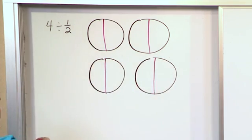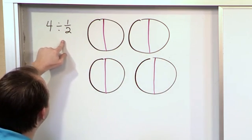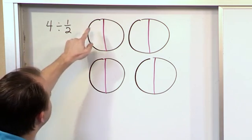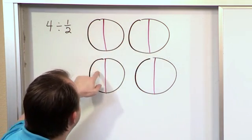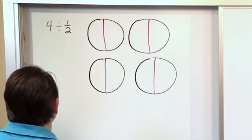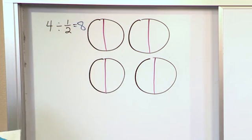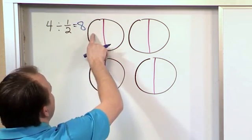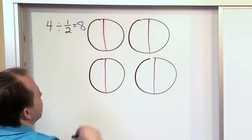Now that I've drawn that on the board, let me ask you a question: how many 1 halfs will fit inside of the number 4? Well, counting them up: 1, 2, 3, 4, 5, 6, 7, 8 halves. So the answer is 8. 4 divided by 1 half is 8, because you have 8 one-half slices that are going to fit inside of this number 4.